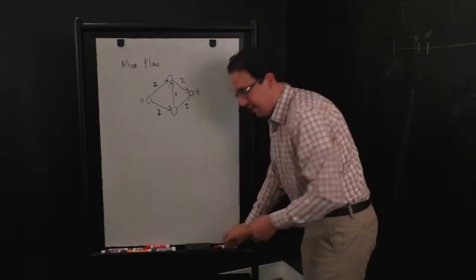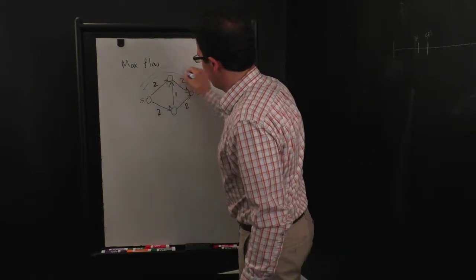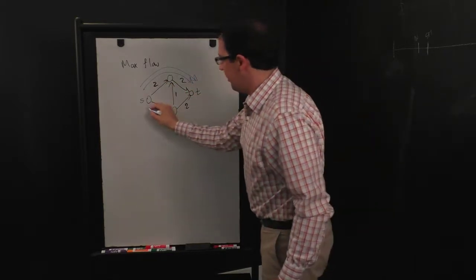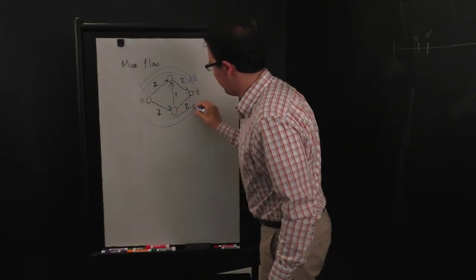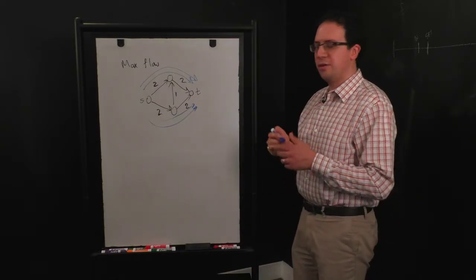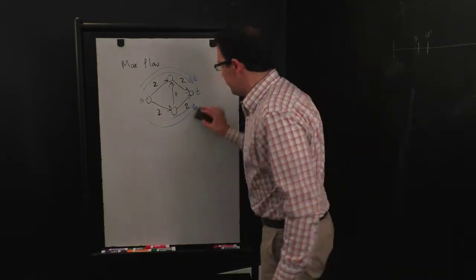So in this example, it's not hard to see that the best we can do is four units of water. We can pump two units of water through these two edges, and we can pump two units of water through these two edges for four units of water. So we haven't exceeded the capacity of any edge, and it's not hard to convince yourself that on this graph you can't do any better.